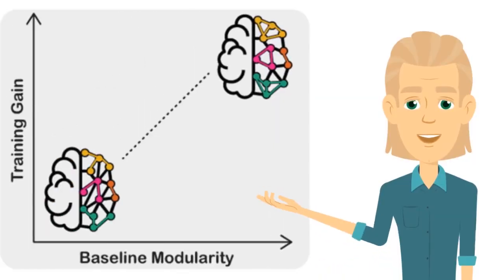So how can we increase the baseline modularity in our brains to maximize the IQ training gains we can get from brain training with apps like i3 Mindware?